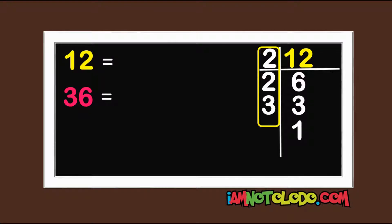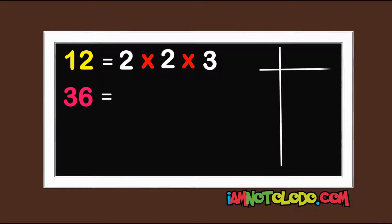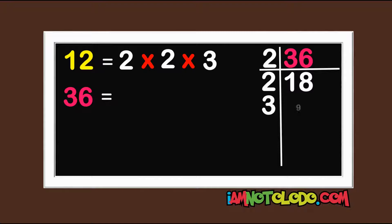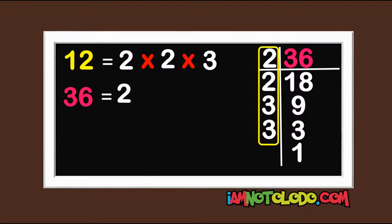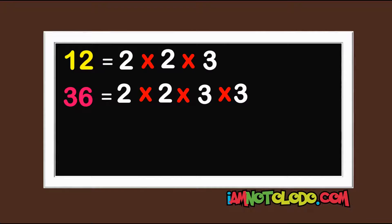Write the numbers: 2 times 2 times 3. Let's do the same thing for 36. 2 in 36 is 18, 2 in 18 is 9, 3 in 9 is 3, and 3 in 3 is 1. So write these numbers: 2 times 2 times 3 times 3. Now watch the next step.